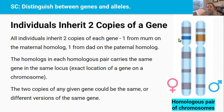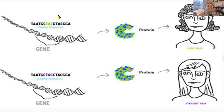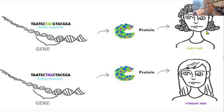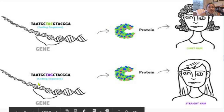Each of the two copies of any given gene could be the same or different versions of the same gene. For example, this gene for eye color — one version could be for blue eyes and another version for brown eyes. This picture shows the relationship between gene, protein, and the physical trait we observe. Here is a gene for hair texture: one version in green produces a protein that causes the curly hair trait, whereas the version in purple produces a protein that causes the straight hair trait.